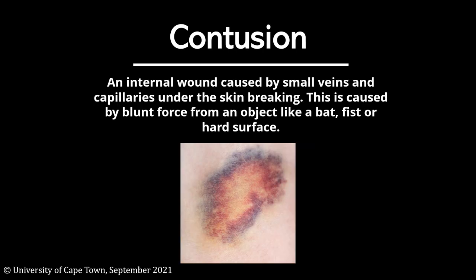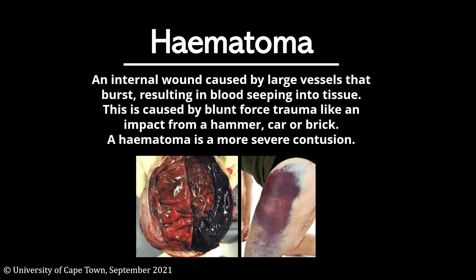A contusion, colloquially referred to as a bruise, is an internal wound caused by small veins and capillaries under the skin that break. This is caused by blunt force from an object like a bat, fist, or hard surface.